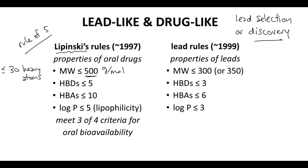Rule two: a drug should have five or fewer hydrogen bond donors — these are OH and NH groups. Rule three: a drug should have 10 or fewer hydrogen bond acceptors — those are oxygen lone pairs and nitrogens with lone pairs.